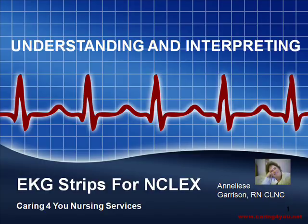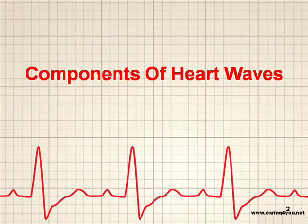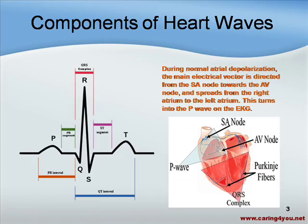The first step in understanding how to read an EKG is to understand the components of the heart waves — what is called the P wave, the QRS complex, the T wave, and sometimes the U wave. If you look on the slide here, you will see the SA node and the AV node.